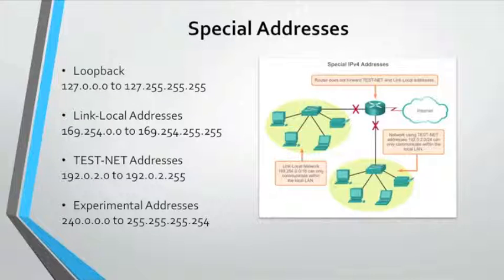Unlike experimental addresses, network devices will accept testnet addresses in their configuration. The experimental address block is reserved for future use, as established in RFC 3313. Currently, these addresses can only be used for research or experimentation purposes and cannot be used in an IPv4 network, though according to the RFC, they could technically be converted to usable addresses in the future.